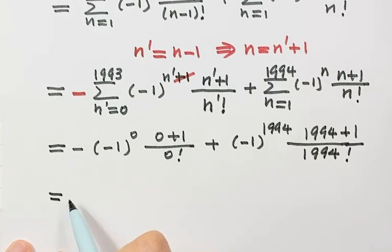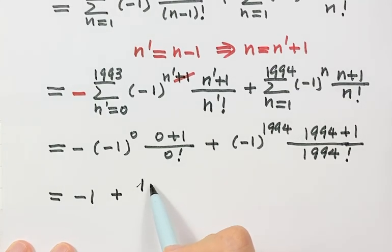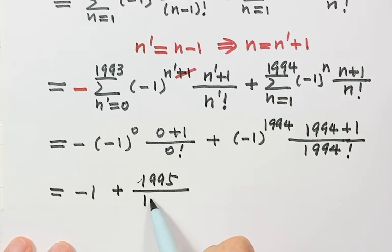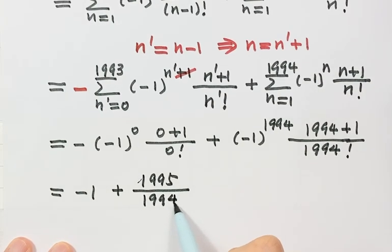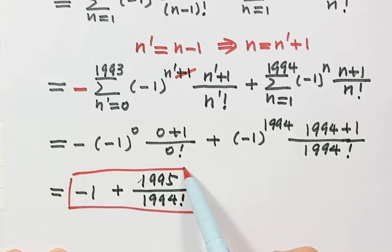Continuing to simplify: the first term gives negative 1 to the power 0, which is positive 1. The second term gives positive 1995 over 1994 factorial. So the final answer is 1 plus 1995 over 1994 factorial.